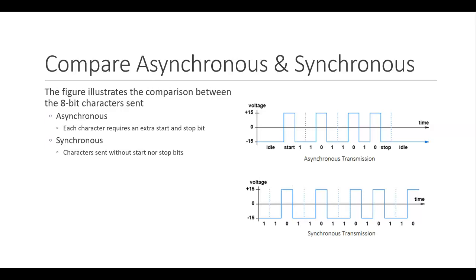Comparing eight-bit characters sent using an asynchronous system versus a synchronous system: each character sent using RS-232 requires an extra start bit and stop bit, so each eight-bit character needs a minimum of ten bits, even when no idle time is inserted. Each character on a synchronous system is sent without start or stop bits. The question then arises: what happens when a sender doesn't have data to send?